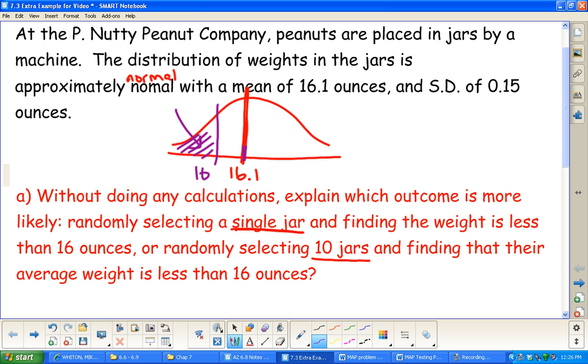As the sample size gets larger, you should be closer and closer to the mean and have less variability. So our answer to that one - it's more likely that a single jar will weigh less than 16 ounces than it would be for a sample of 10, because the sample mean gets closer to the 16.1.